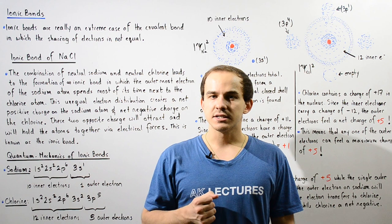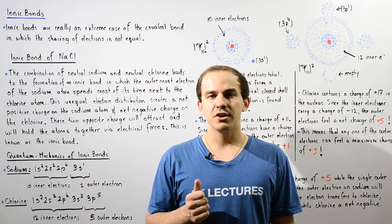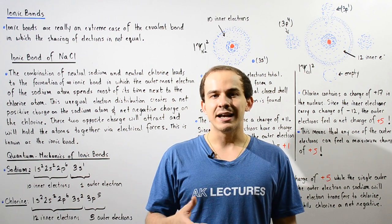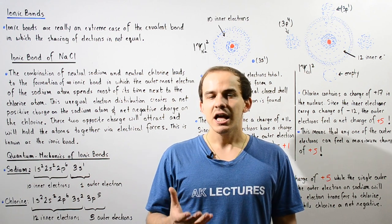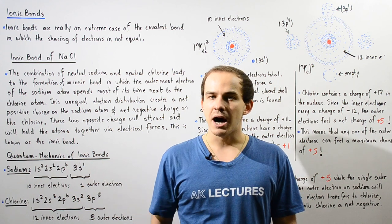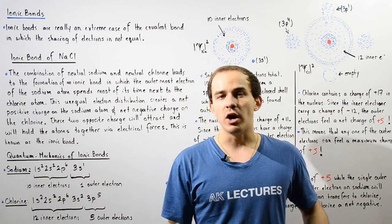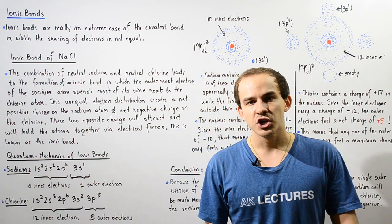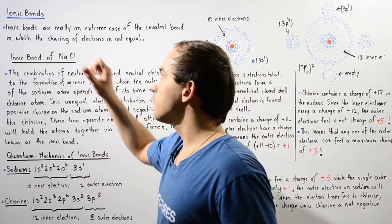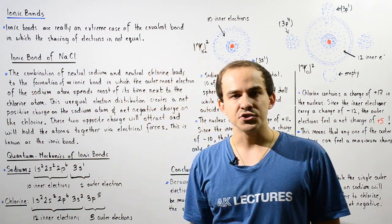In the previous lecture, we used quantum mechanics to help us explain and understand the formation of covalent bonds. Now, let's actually use quantum mechanics to help us explain the formation of ionic bonds.